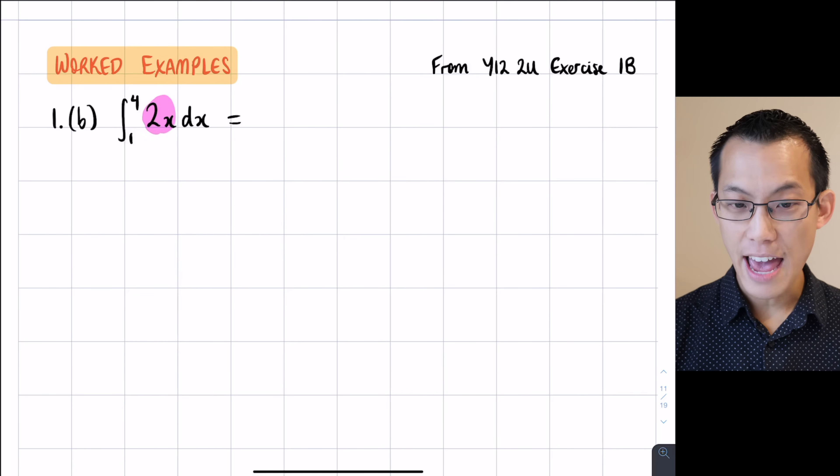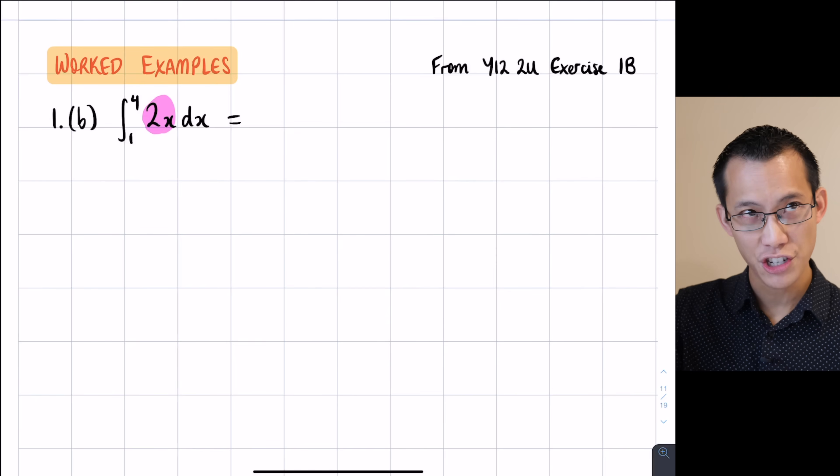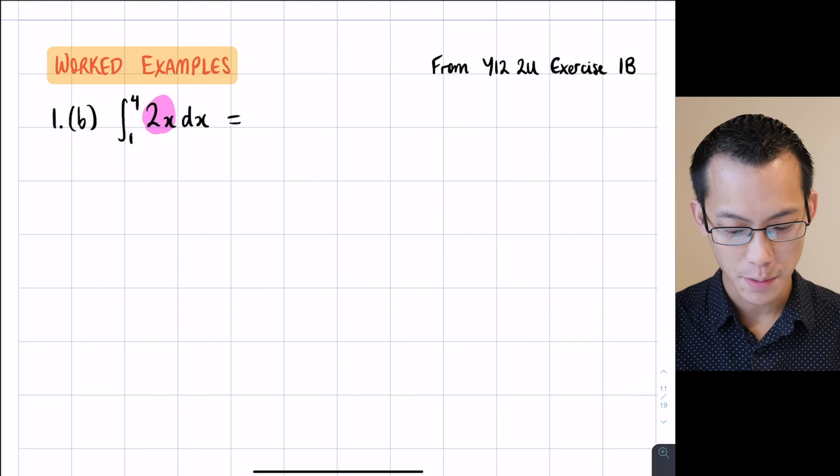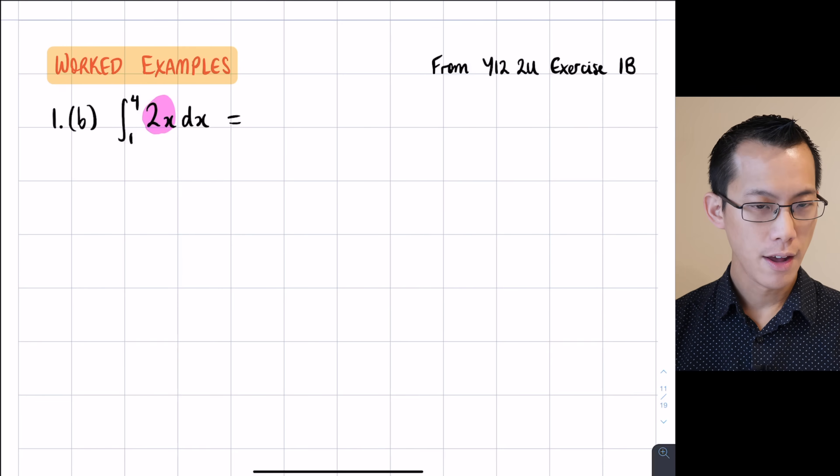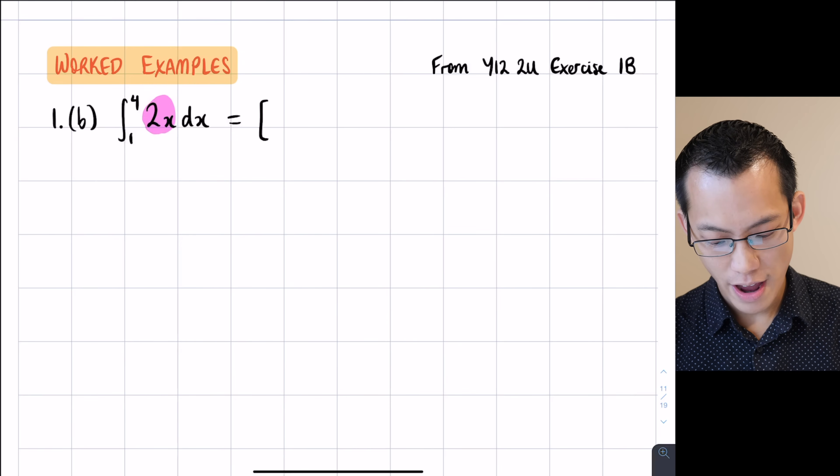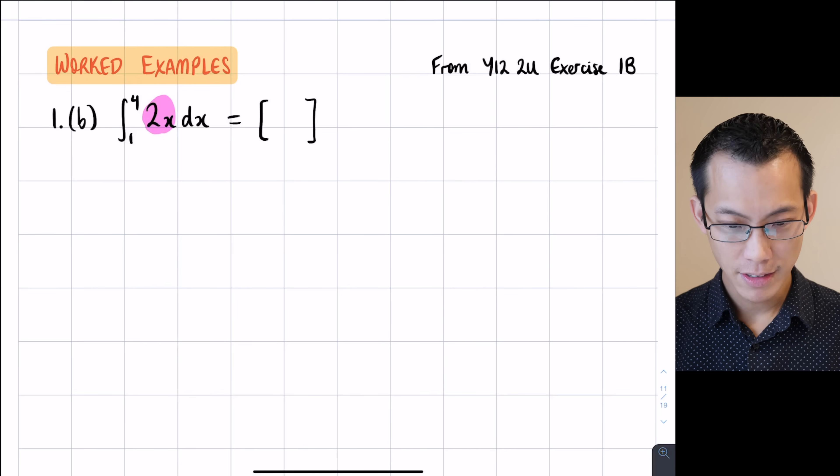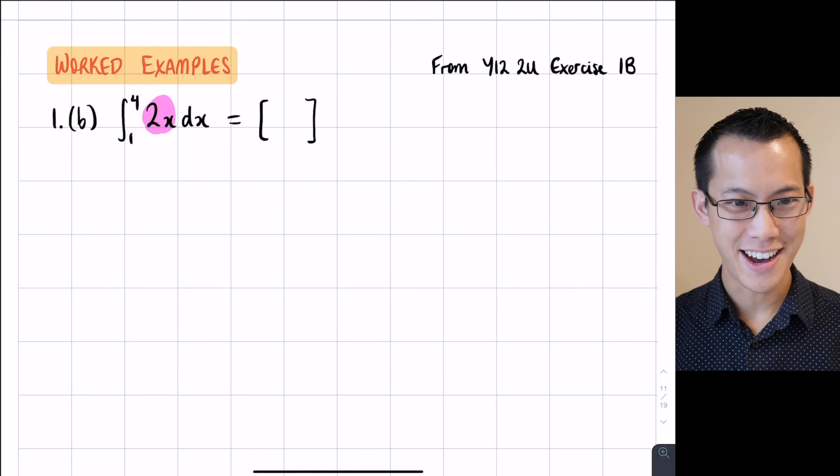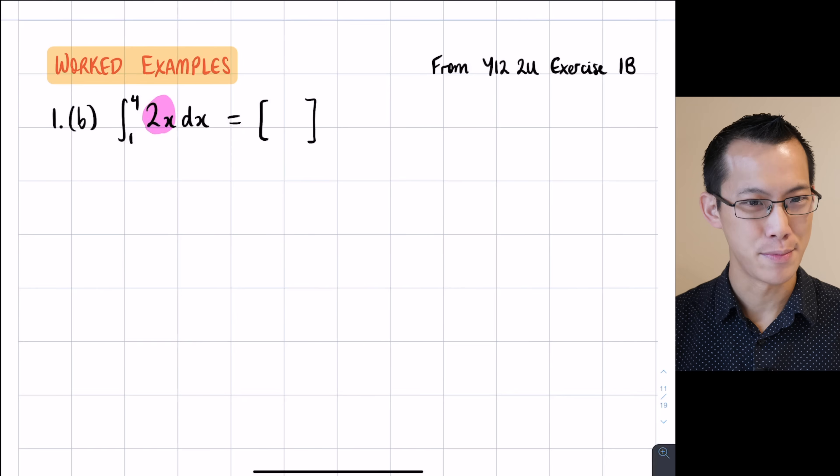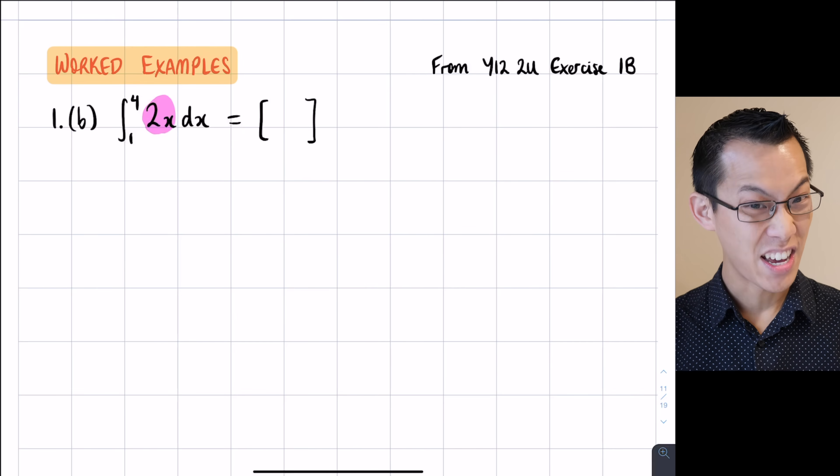Now, how do we use the fundamental theorem of calculus to answer this question? Well, I'm going to say that 2x in there, that's the f(x) that I'm now going to find the primitive of. What's the function that when I differentiate it, gives me that?